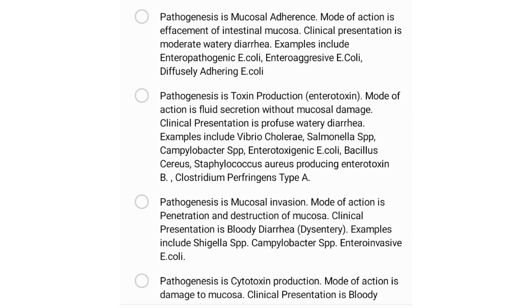Another group has a pathogenesis of mucosal invasion, with a mode of action of penetration and destruction of the mucosa. The clinical presentation is bloody diarrhea or dysentery. Examples of such organisms include Shigella species, Campylobacter species, and enteroinvasive E. coli.